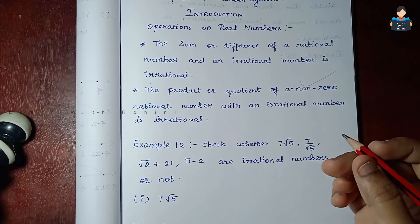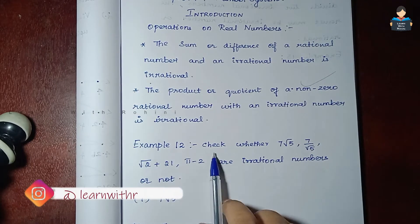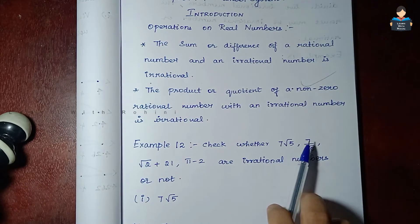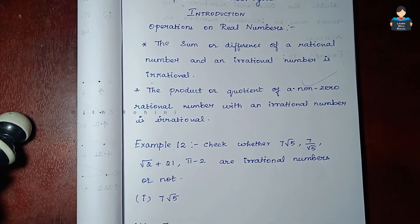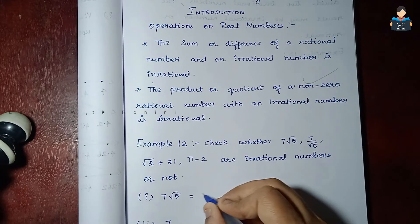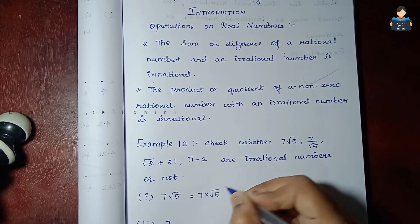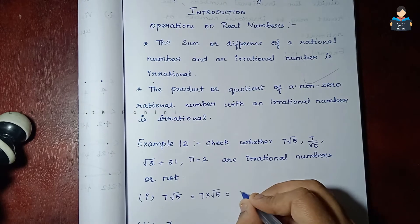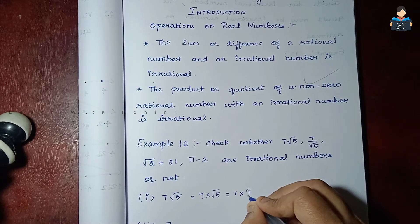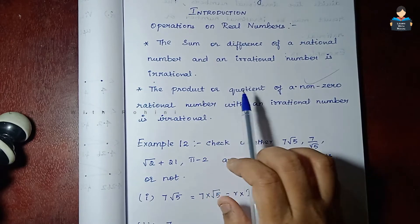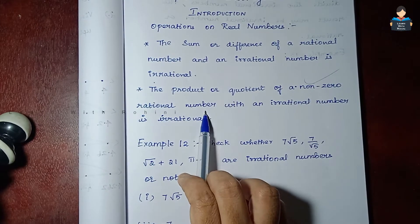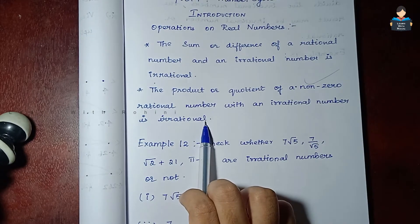Example 12: Check whether 7√5, √2 + 21, and π − 2 are irrational numbers or not. For 7√5, this is 7 into √5. Here 7 is a rational number and √5 is an irrational number. The product or quotient of a non-zero rational number with an irrational number is irrational.